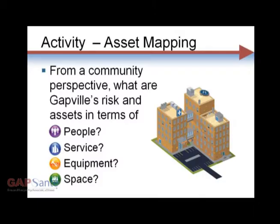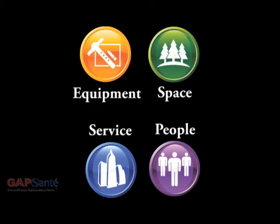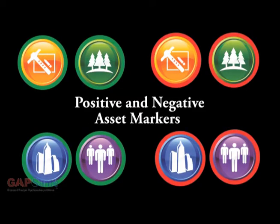Asset mapping: What would be the risk and protective factors that people in this community would use to address psychosocial issues? Participants are broken into groups and provided with asset markers in the four categories of service, space, equipment, and people. There is a positive set of markers circled in green for protective factors, and a red set for risk factors.